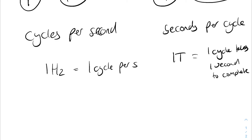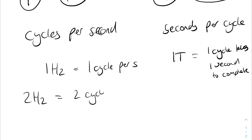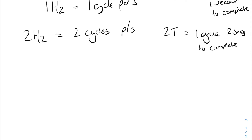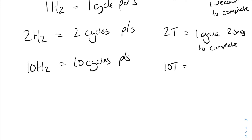You can see how they seem similar. Let's increase it — let's go to two hertz. Two hertz means you're getting two cycles per second. Two T means it takes one cycle two seconds to complete. Let's go to 10 hertz — that means you're getting 10 cycles per second. And 10T means it takes one cycle 10 seconds to complete. You see the difference?